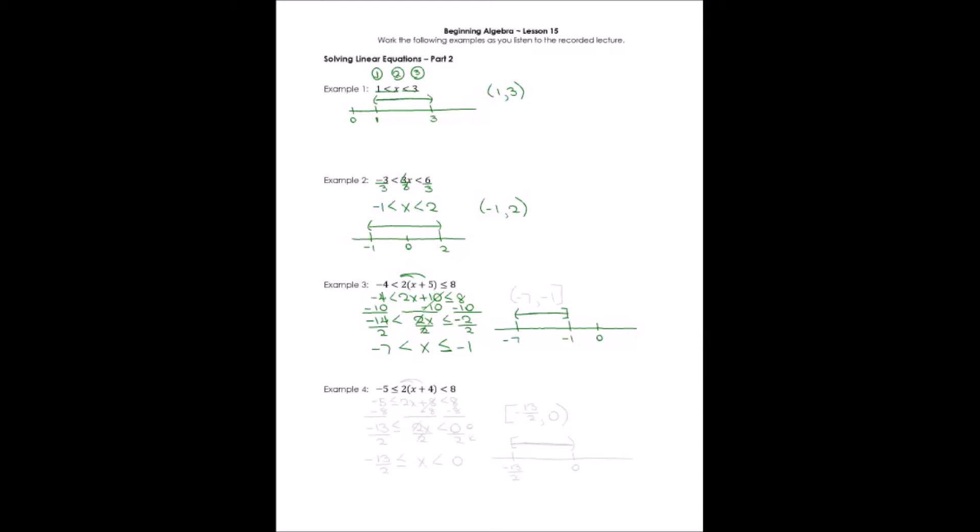There's an equal sign there with that inequality. Now let's write the set notation. The smallest number it can be, negative seven. The largest number it can be, negative one. And it includes negative one.